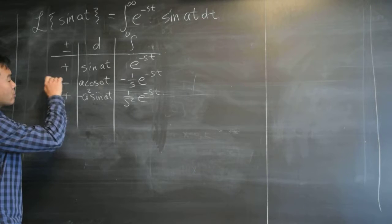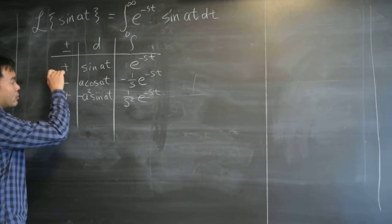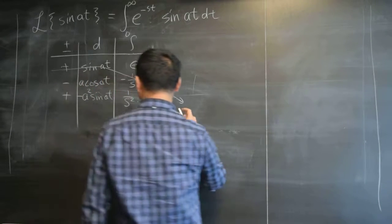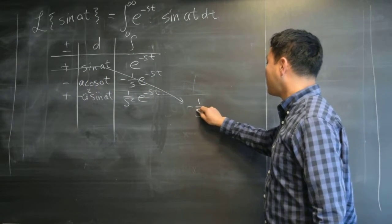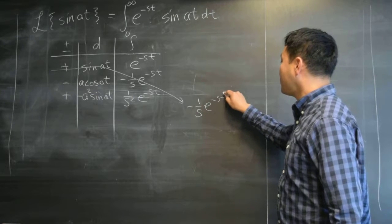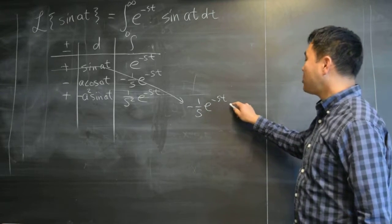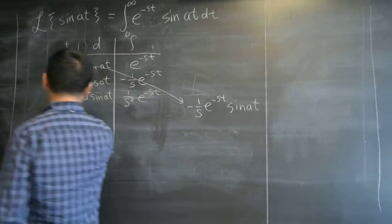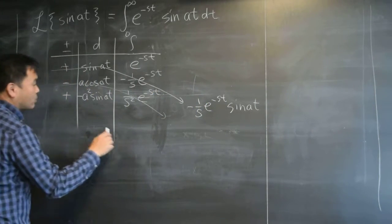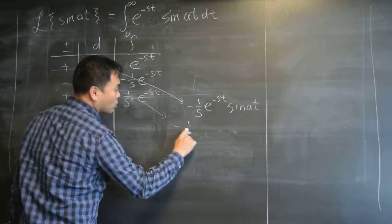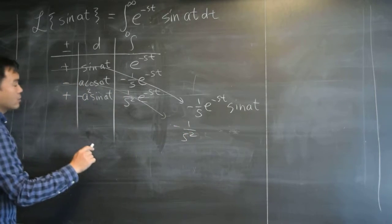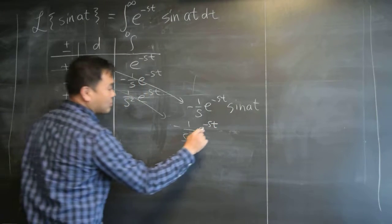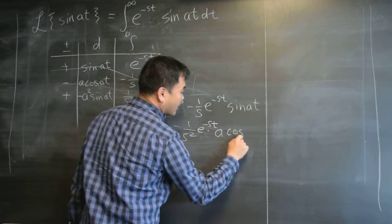All right, so the integral result is the following. If I do that, that gives you negative one over s e to the negative st times sine at. And then, going this way gives you negative one over s squared e to the negative st times a cosine at.